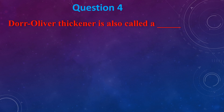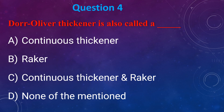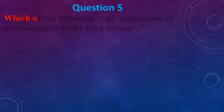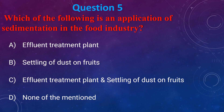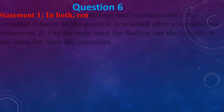A door lever thickener is also called: (a) Continuous thickener, (b) Tractor, (c) Continuous thickener, (d) None of the mentioned. The answer is (c). Which of the following is an application of sedimentation in the food industry? (a) Effluent treatment plant, (b) Settling of dust on fruit, (c) Effluent treatment plant and settling of dust on fruits, (d) None of the mentioned. The answer is (c).